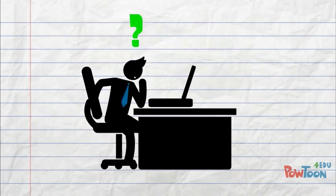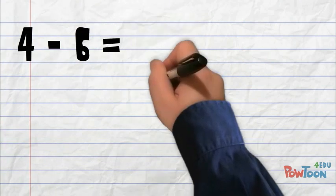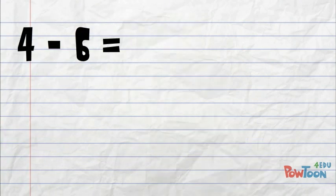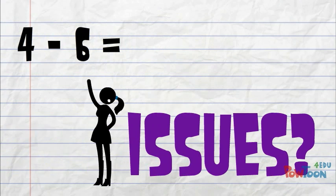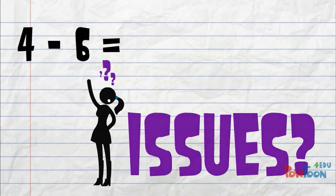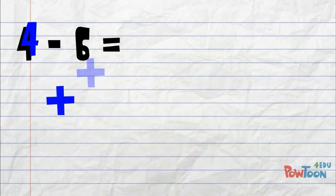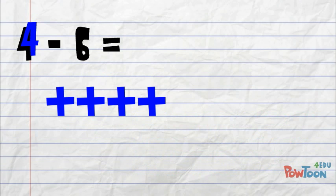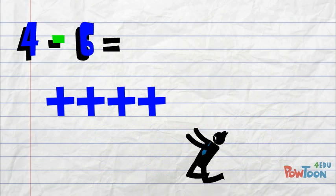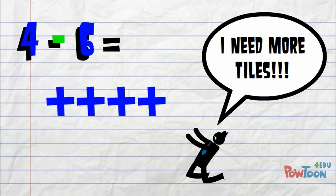Take a look at this next problem, but be careful. It has a little twist to it. Positive 4 minus positive 6. Before we model this one with our tiles, can you see any issues that we might run into? In this case, we would start with 4 positive tiles. The problem we run into is that in order to subtract positive 6, we don't have enough tiles to take away. So what do we do?